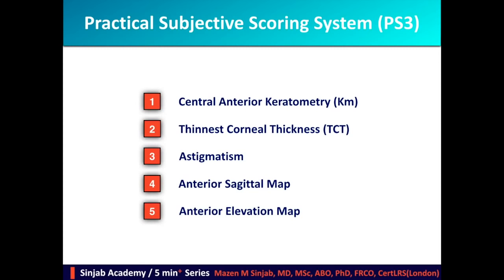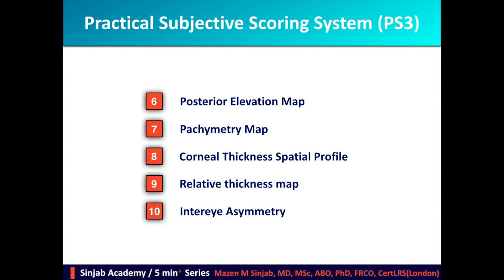The 10 points are: central anterior keratometry, thinnest corneal thickness, astigmatism, anterior sagittal map, anterior elevation map, posterior elevation map, pachymetry map, corneal thickness spatial profile, relative thickness map, and inter-eye asymmetry.